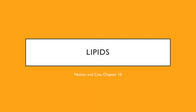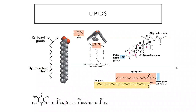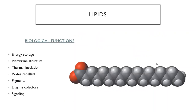Lipids are made of long chains of hydrocarbons, usually with some other sort of head group attached. The type of head group and the arrangement of the long hydrocarbon chain affects the function of the molecule and how it behaves.